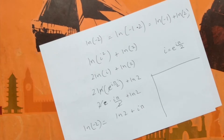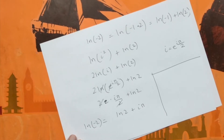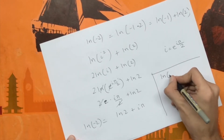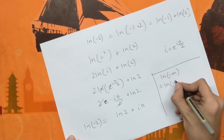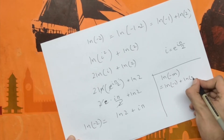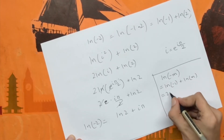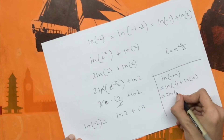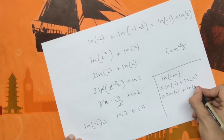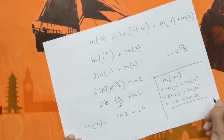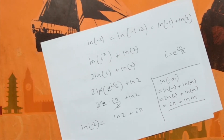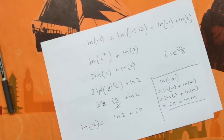Let's generalize this for the natural log of all negative numbers. For ln(−m), we write it as the natural log of minus 1 plus the natural log of m. This becomes 2 times the natural log of i plus the natural log of m, which simplifies to i·π plus the natural log of m. This is the generalized version for all negative numbers minus m, again assuming we can take values to the complex plane.